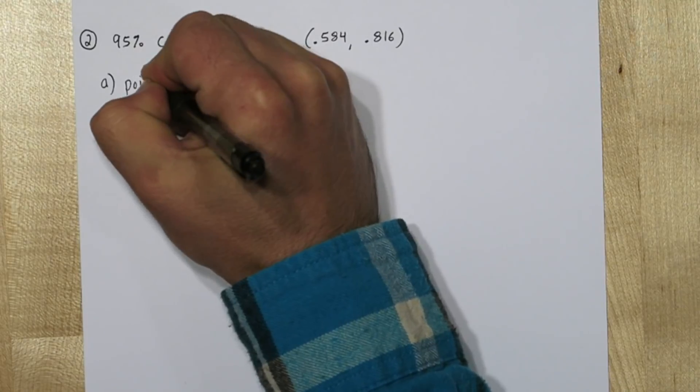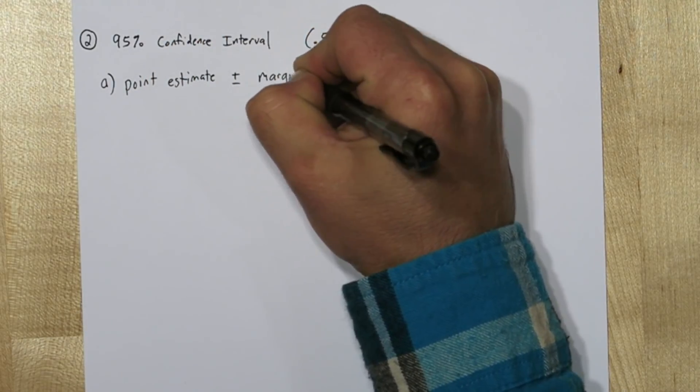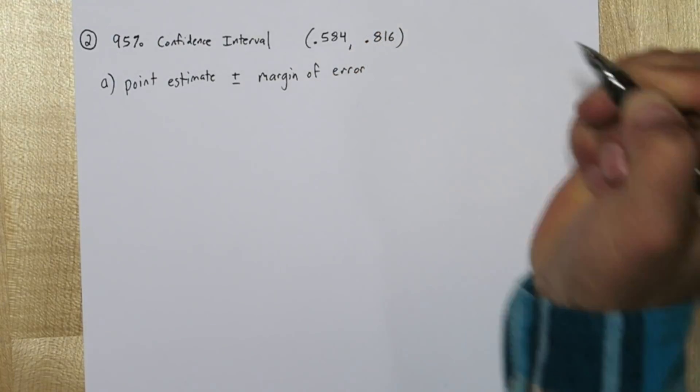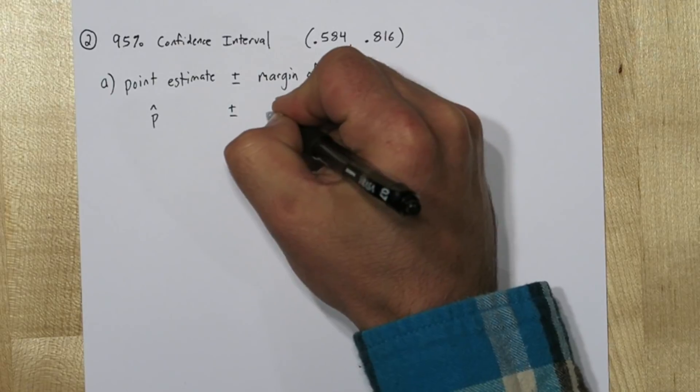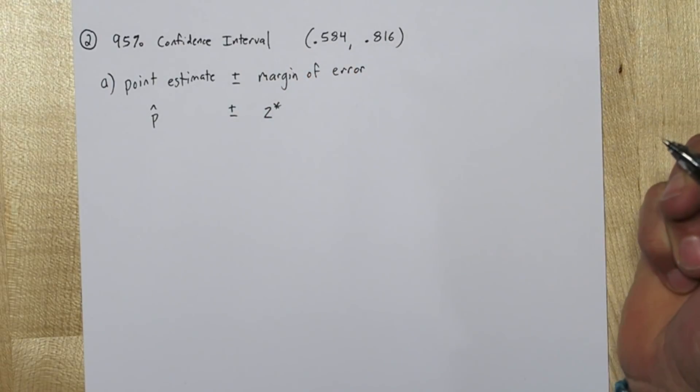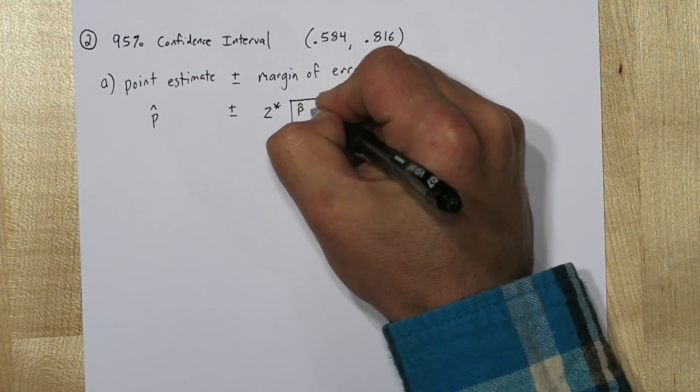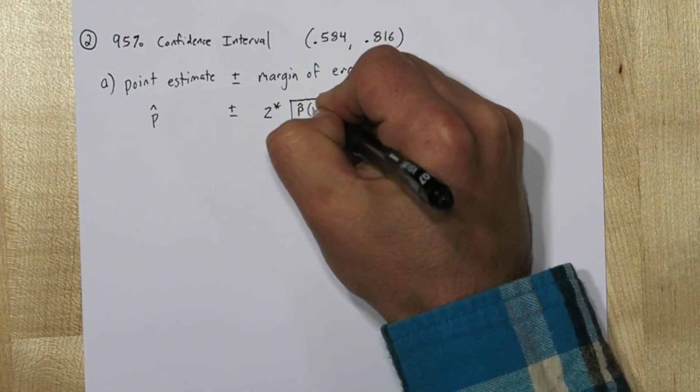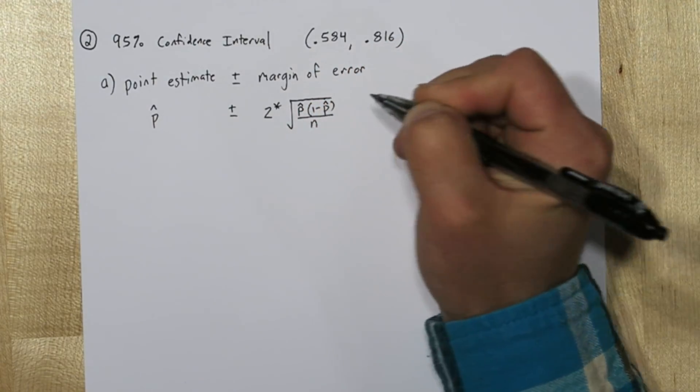Now in Part A you're supposed to figure out how many students there are. So every confidence interval is a point estimate plus or minus a margin of error. In this case we're estimating a proportion, so our point estimate is p-hat, and our margin of error is made up of a critical value z-star and a standard error, which is the square root of p-hat times 1 minus p-hat over n.